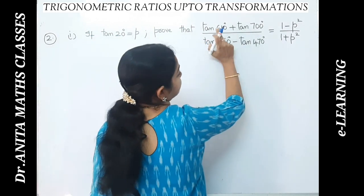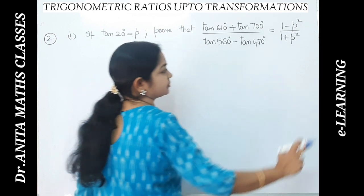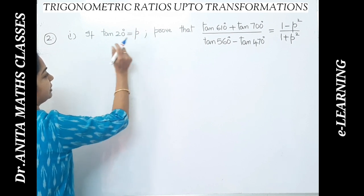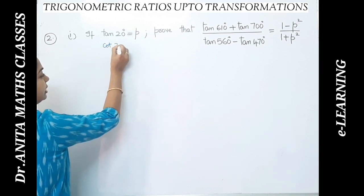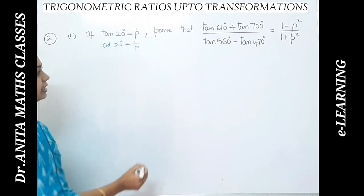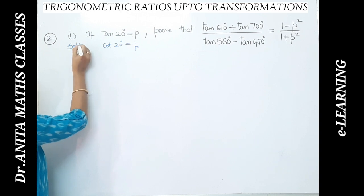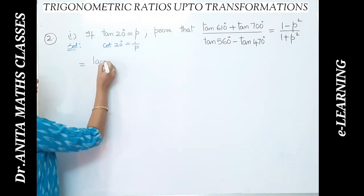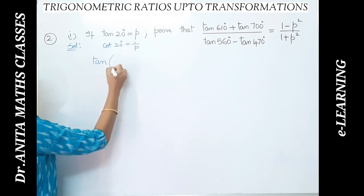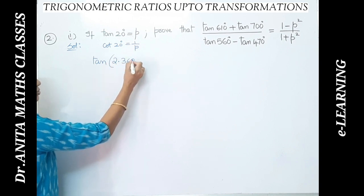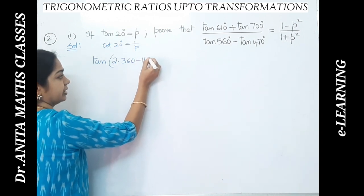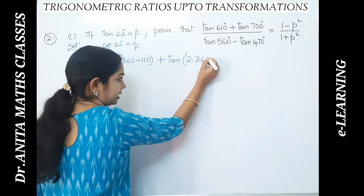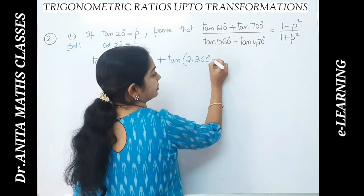Next problem: given tan20° = p, prove that tan610° + tan700° + tan560° equals 4tan20° × (1 − p²)/(1 + p²). We have to express the left-hand side in terms of p. Since tan20° = p, cot20° = 1/p. We can write 610° as 2×360° − 110°, which gives 720° − 110°, and tan700° as 2×360° − 20° = 720° − 20°.